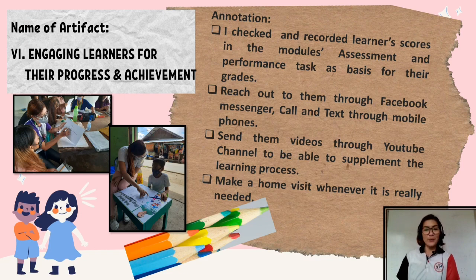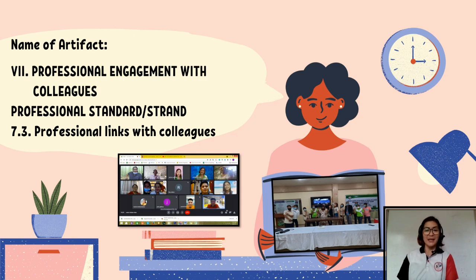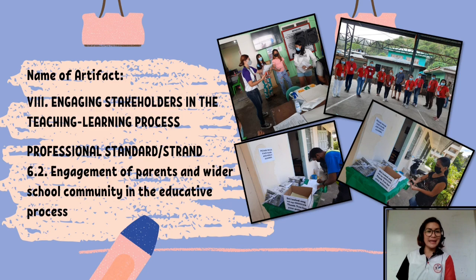After that, we give our annotation. The seventh artifact is professional engagement with colleagues. The professional standard or strand under this artifact is professional links with colleagues. I have pictures there, and in my annotation I describe how I modeled or facilitated my colleagues.